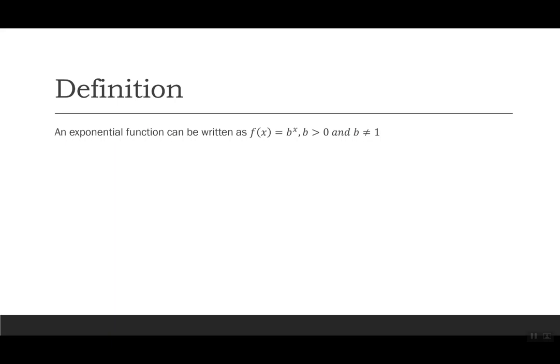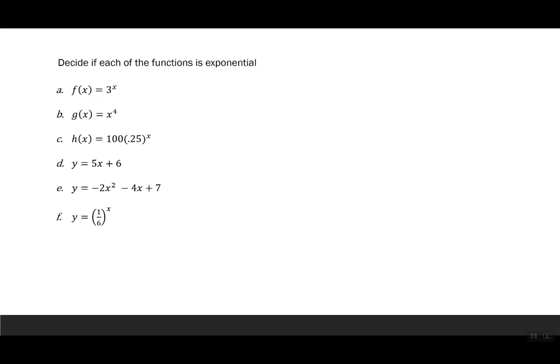I'm going to break this into two types: when b is greater than one, and what happens when b is between zero and one. First, let's identify what is and what is not an exponential function. In example (a), f of x equals three to the x — the base is a number and the exponent is a variable, so this is an exponential function.